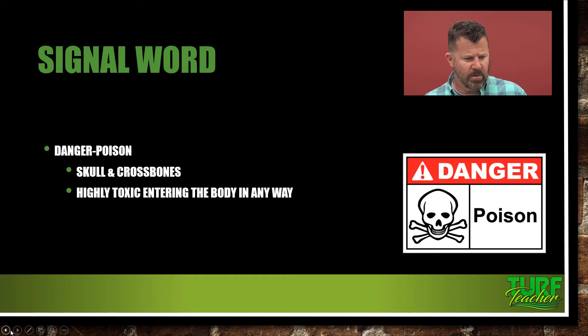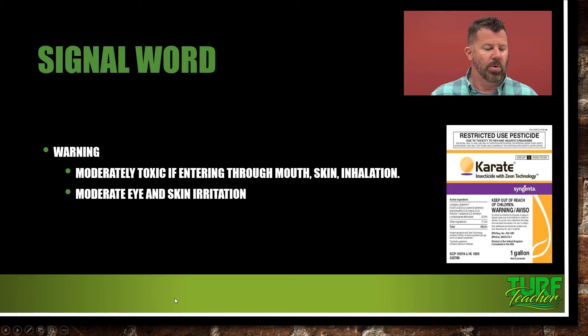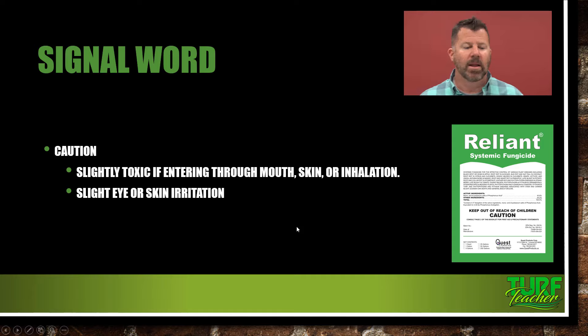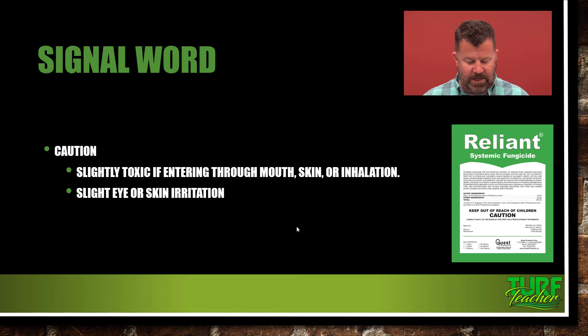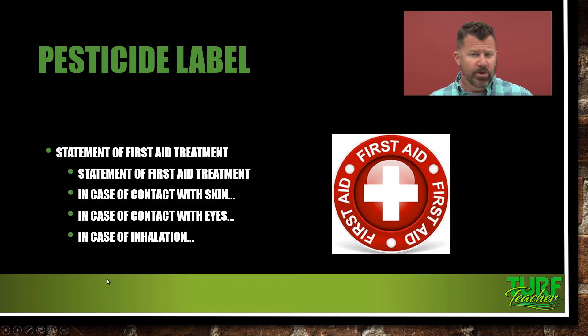Warning is moderately toxic if entering through the mouth, skin, or inhalation — there's Karate again, with moderate eye and skin irritation. Even though it's an insecticide with only a warning label, it is restricted use because of toxicity to fish and other aquatic animals. Caution means slightly toxic if entering through the skin, mouth, or inhalation, with slight eye or skin irritation. Danger — without poison — means the product can cause severe eye damage or skin irritation, whereas danger/poison with the skull and crossbones indicates it is toxic by any route into the body. And that is what the EPA determines during those six years — whether danger/poison, danger, warning, or caution needs to be added to the label.